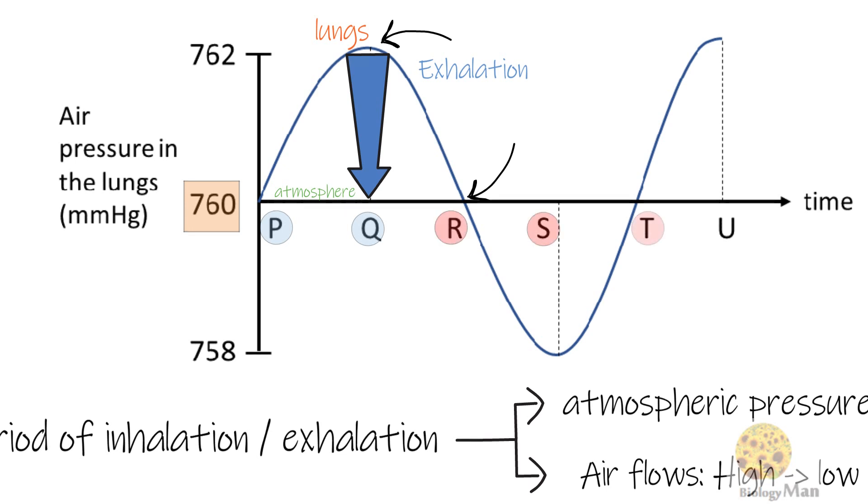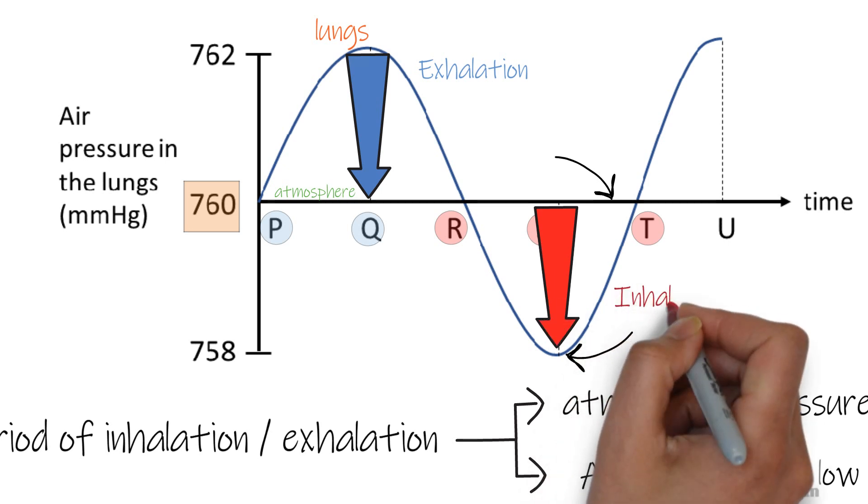In the period RST, the curve is below 760 mmHg, which means the lung pressure is lower than the atmospheric pressure. So air flows into the lungs from the atmosphere. Inhalation takes place.